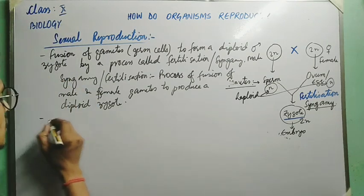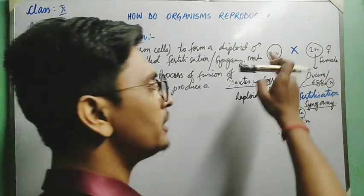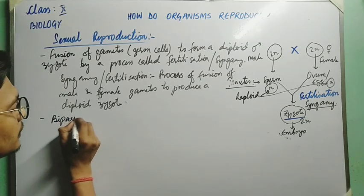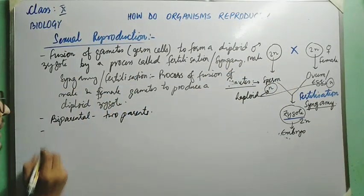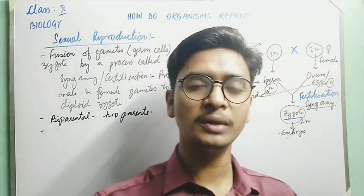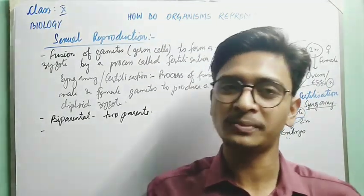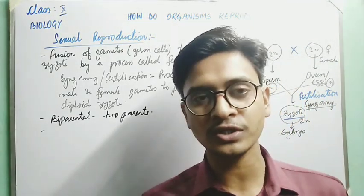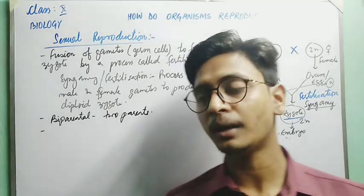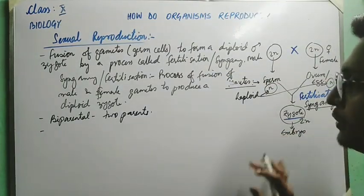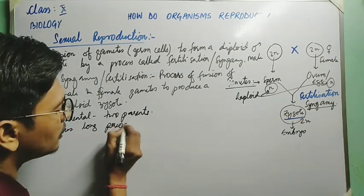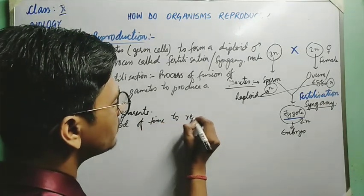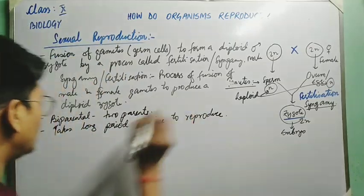In sexual reproduction, two parents are involved — one male and one female — so it is biparental, meaning involving two parents. This reproduction process is complex, so it takes a much longer period of time for the development of the infant.